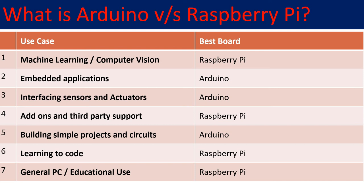That's it from my side. I hope you got the point. In this video I listed the key differences between Arduino Uno and Raspberry Pi 4, their applications and use cases. Thank you so much for watching. In the next video I will come up with a comparison of different versions of Raspberry Pi and Arduino Uno.